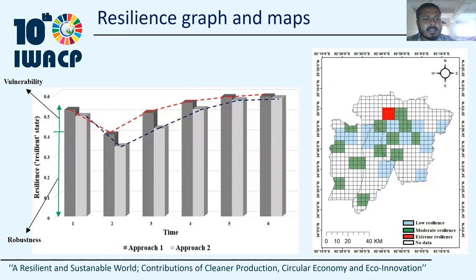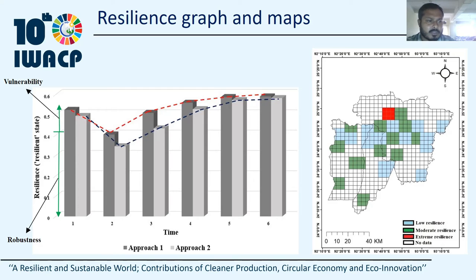Using JNE software and the developed dynamic Bayesian network, resilience values for each time period were calculated for both approaches. A total of six different time periods are considered. The resilience values for the surveyed locations were evaluated separately for each time period. All collected data were mapped, and resilience values for the entire study area across six different time periods were calculated, as shown in the left-hand side figure. The y-axis represents the probability of the high resilience state. The resilience profiles of both approaches are highly similar, which validates our proposed approach.